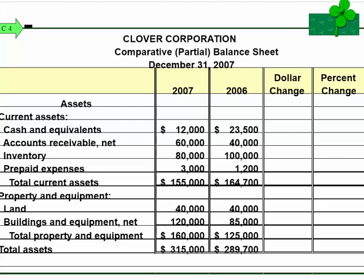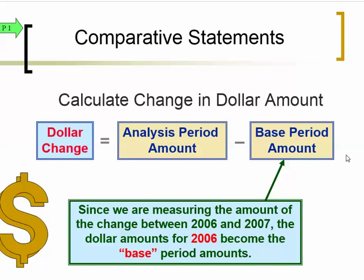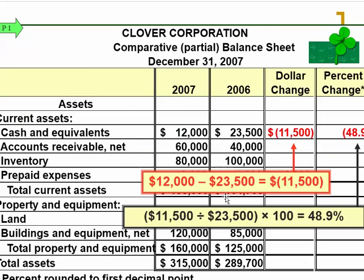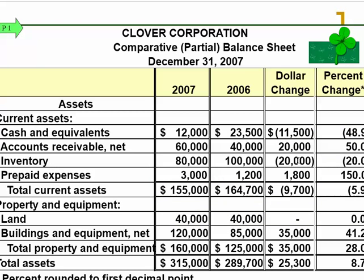Here's an example using Clover Corporation. We begin horizontal analysis by calculating the dollar change and percentage change in account balances. The dollar change is the analysis period amount minus the base period amount, and the percentage change is the dollar change divided by the base period amount multiplied by 100. For example, the cash balance changed from $23,000 (base year) to $12,000 (analysis year), giving a dollar change of -$11,500. Dividing $11,500 by the base period amount of $23,500 and multiplying by 100 gives a 48.9% decrease in cash from 2006 to 2007. We can do this for all line items.